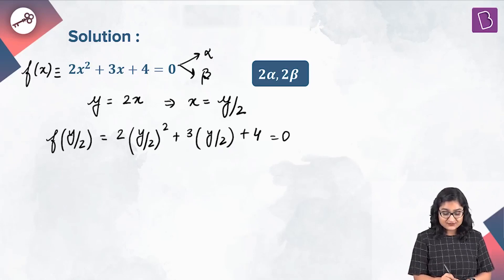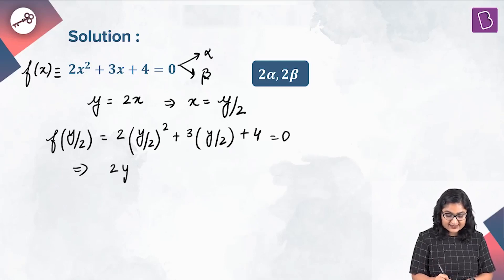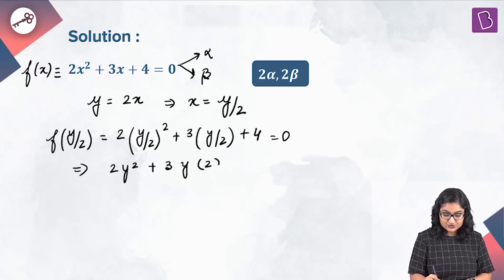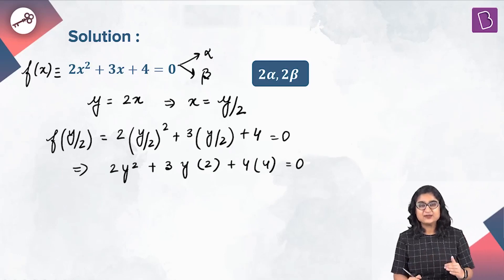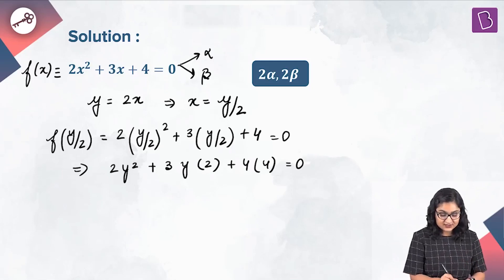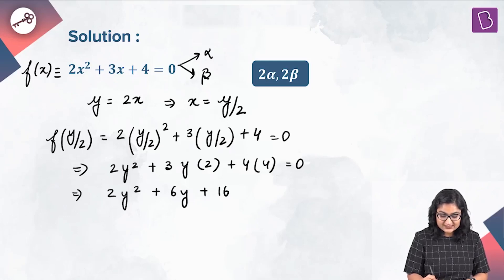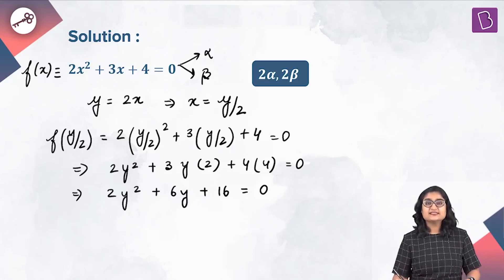If I simplify this further, what I will get is 2y squared plus 3y times 2 plus 4 times 4 equal to 0. I have just taken LCM and the LCM is 4. Simplifying further, I will get 2y squared plus 6y plus 16 equal to 0.